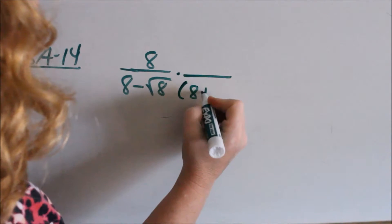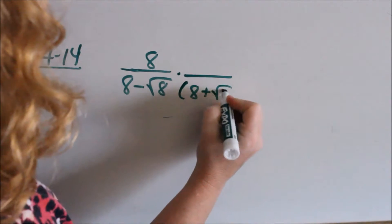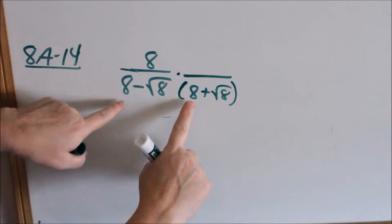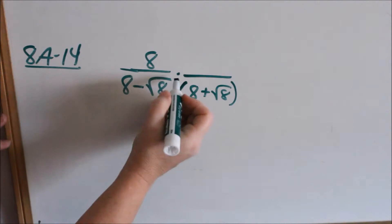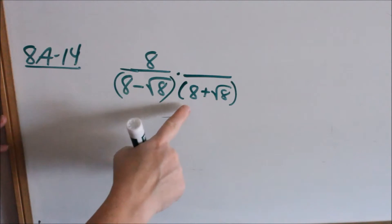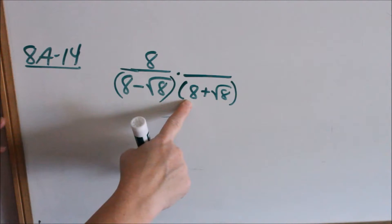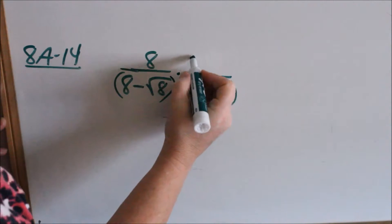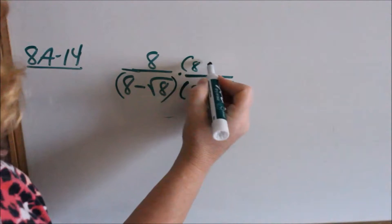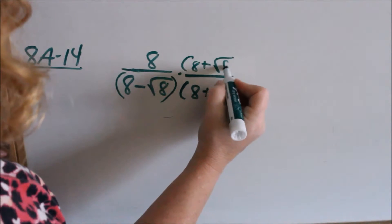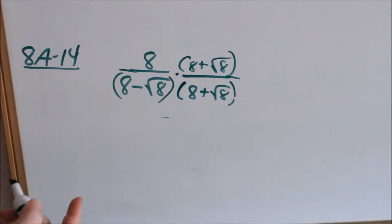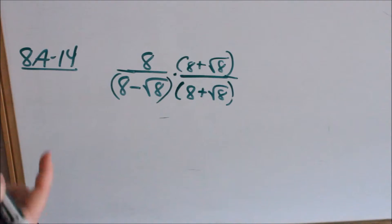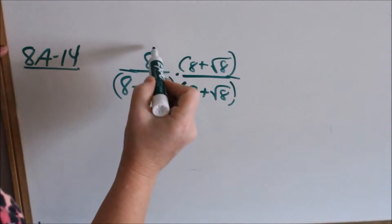We multiply by the conjugate of this. The conjugate of that looks exactly the same, except the sign is different — the numbers and the radicals are the same. Whatever I do to the denominator, I have to do to the numerator. If I'm going to multiply the denominator by the conjugate, I have to multiply the numerator by the conjugate. Now I'm just multiplying fractions, numerator to numerator, denominator to denominator.